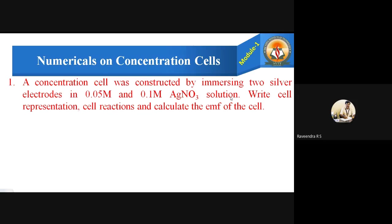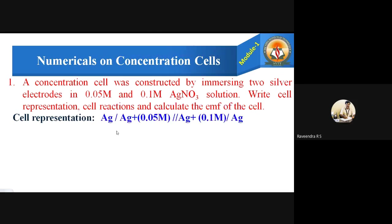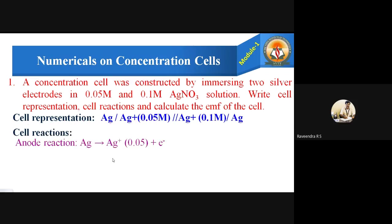The cell is constructed by immersing two silver electrodes — both anode and cathode — dipped in two different concentrations of silver nitrate. One concentration is 0.05 molar (lower concentration) and the higher concentration is 0.1 molar. The cell representation is: Ag | Ag⁺ (0.05 M) ‖ Ag⁺ (0.1 M) | Ag, where 0.05 M is M1 (lower) and 0.1 M is M2 (higher concentration).